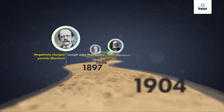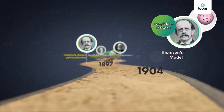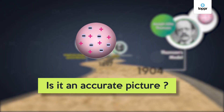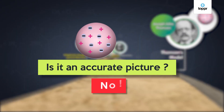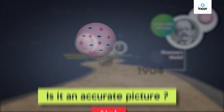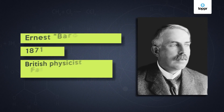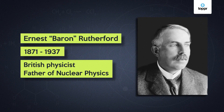So far, you have seen how Thomson tried to understand the atom and visualized it. He gave us the plum pudding model, but did it give an accurate picture of the atom? No, because it had so many flaws. But these flaws were taken care of by Ernest Rutherford in his model of the atom, proposed in 1911.